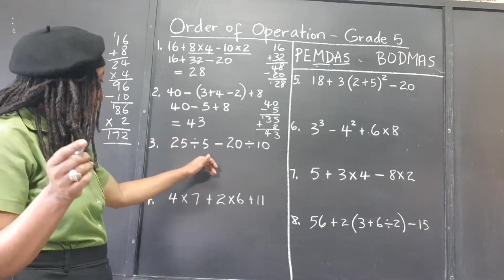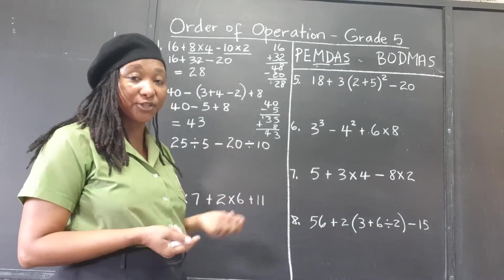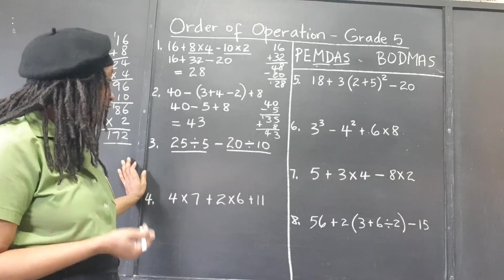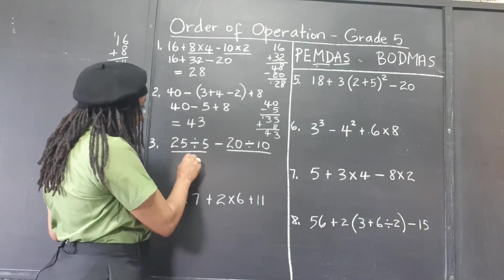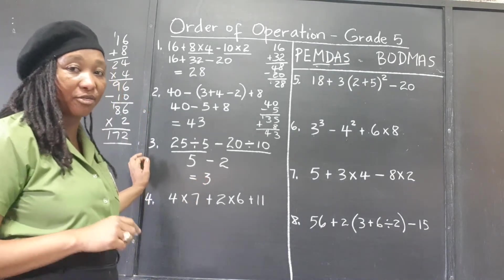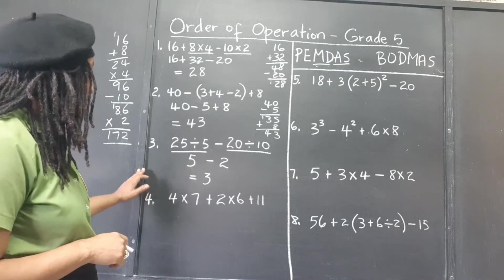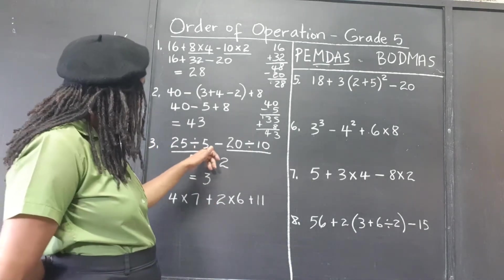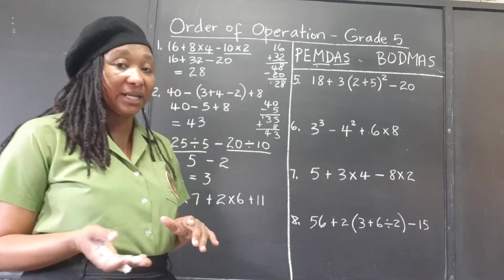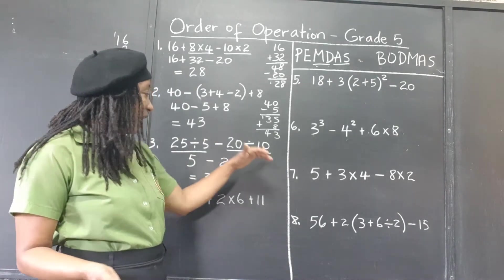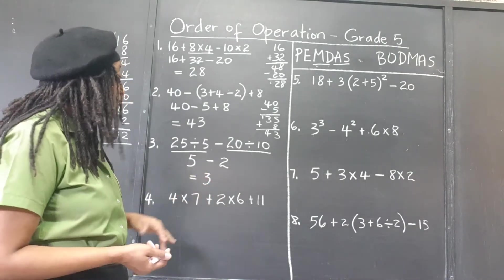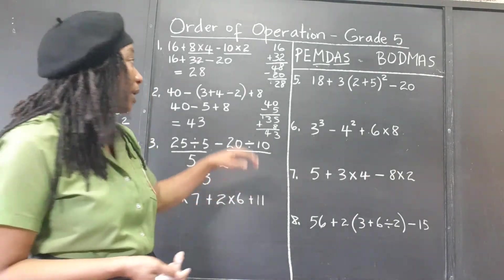Now we have 25 divided by 5 minus 20 divided by 10. We have divisions and subtraction. We must work the divisions first. 25 divided by 5 is 5, and 20 divided by 10 is 2. So 5 minus 2 gives us a final answer of 3. If we had worked straight across: 25 divided by 5 is 5, then 5 take away 20 would give negative 15, divided by 10 gives negative 1.5 — a totally different answer from 3.